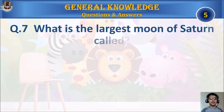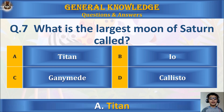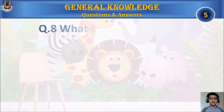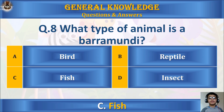Question 7: What is the largest moon of Saturn called? A) Titan, B) Io, C) Ganymede, or D) Callisto? Your time starts. Question 8: What type of animal is a barramundi? A) Bird, B) Reptile, C) Fish, or D) Insect? Your time starts. The answer is C) Fish.